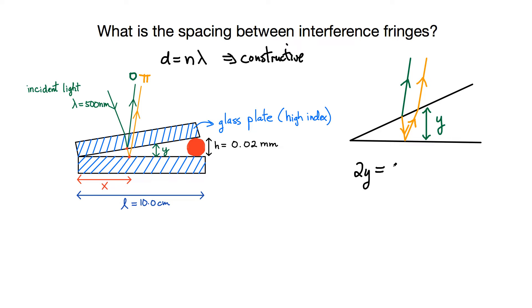If I write this as n times lambda, in this case this will be the condition for destructive interference. And it's destructive because, although this is typically the condition for constructive interference if you're just looking at the path difference, in this case, because of this extra reflection, this extra phase shift, this here's the condition for destructive interference. The condition for a bright fringe becomes this one now, and this will be constructive interference.